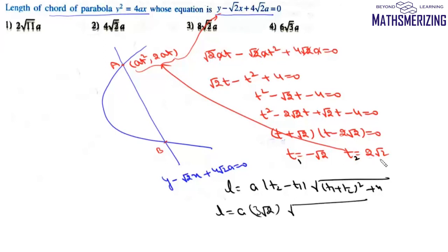(t₁ + t₂)² = (√2)² = 2, so we have √(2 + 4) = √6. The length is a·3√2·√6 = 6a√3, which is option 4.